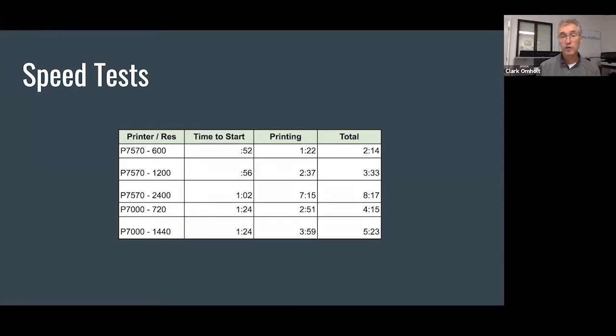The difference between 600 and 720 is quite substantial. The P7570 is a lot faster, and I'll show you a chart in a moment. The P7570 is substantially faster, both in terms of time to start printing as well as print time.